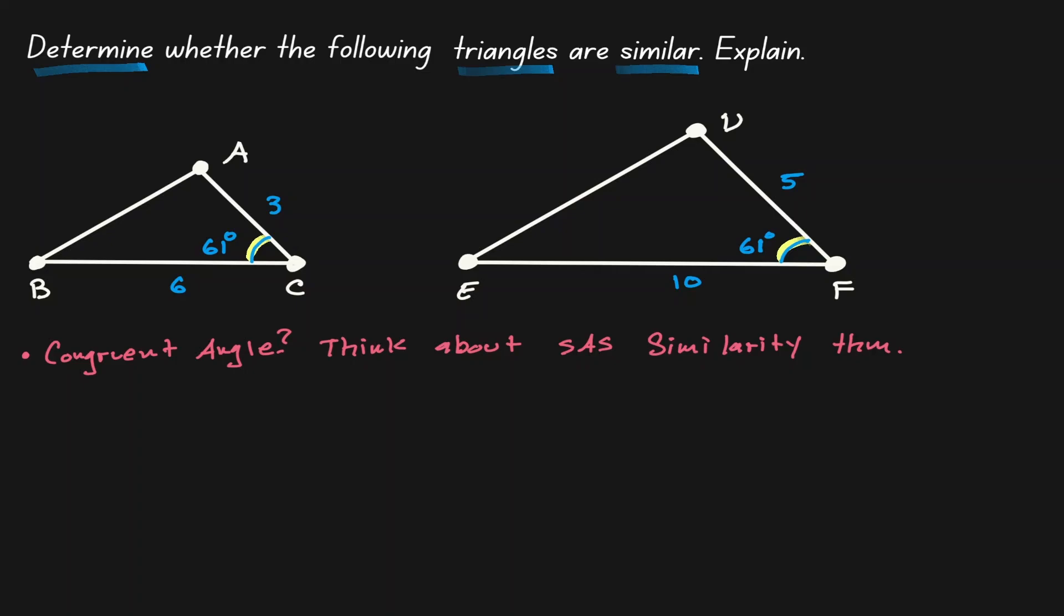To verify that we can use side angle side, now we want to show that the line segments on the sides of those angles are in proportion to each other. Now let's look at the proportionality between line segment AC and BF. That would be equal to 3 over 5. Now let's look at the proportion of the line segment BC and EF. That would be equal to 6 over 10.